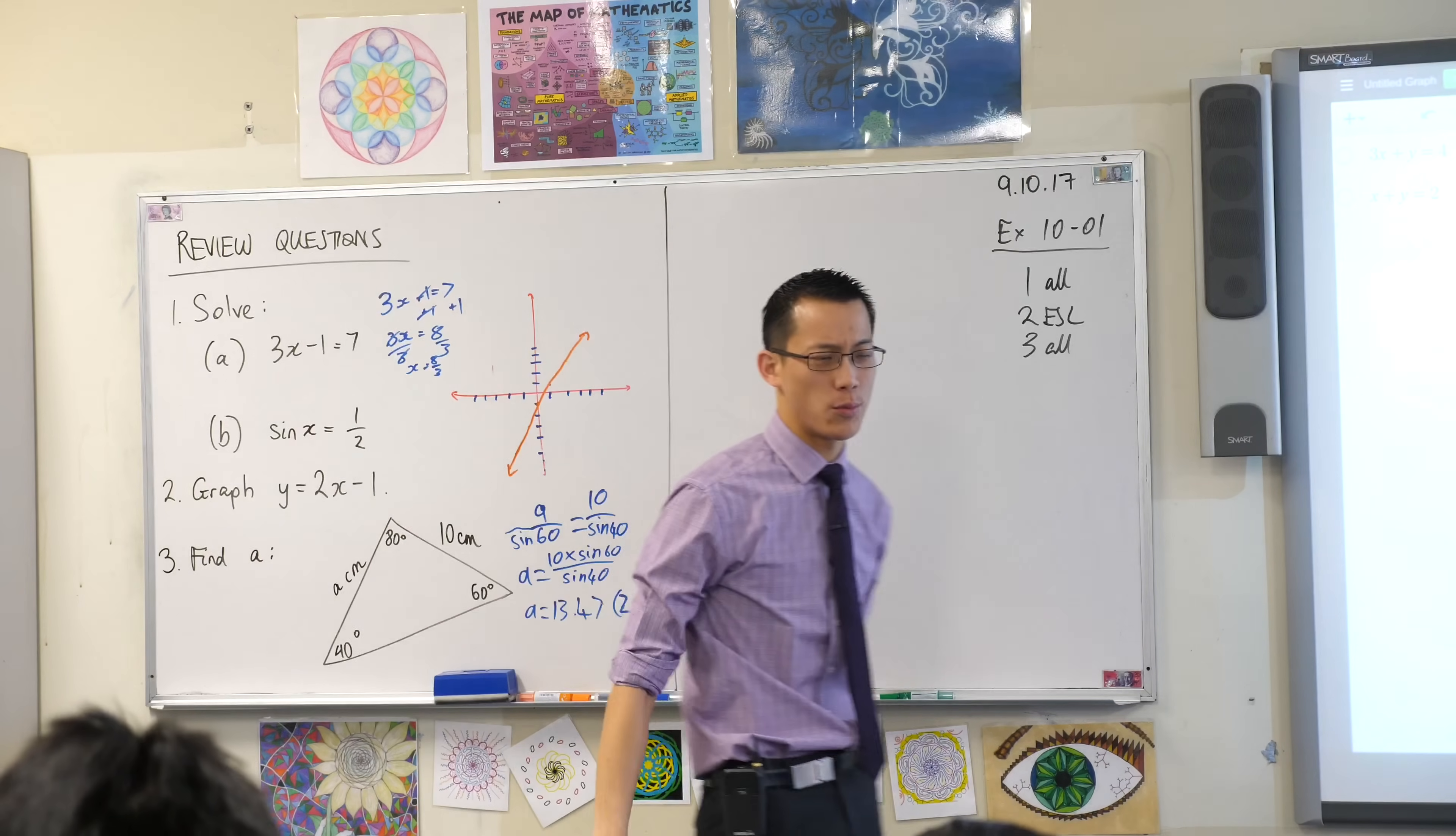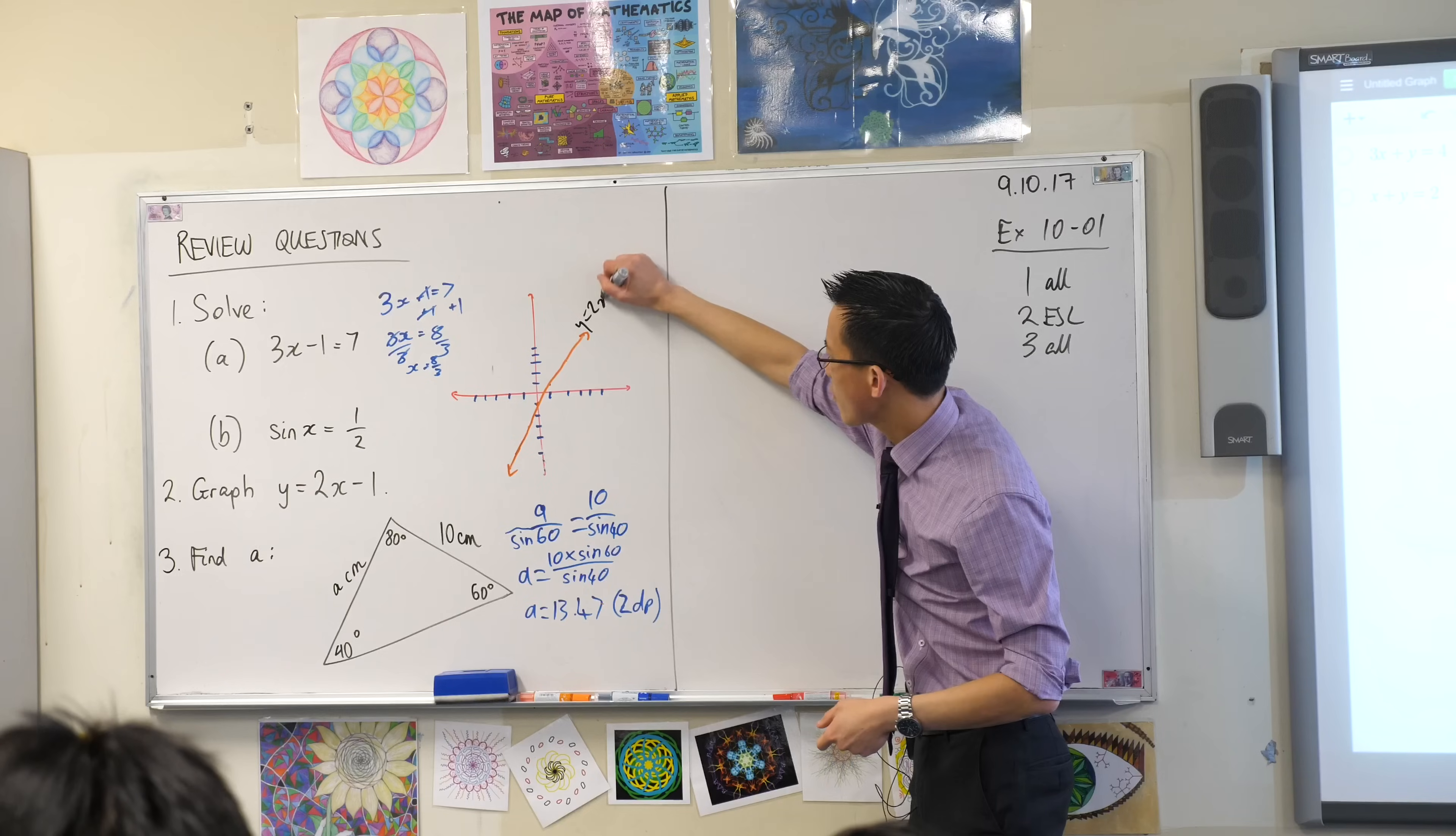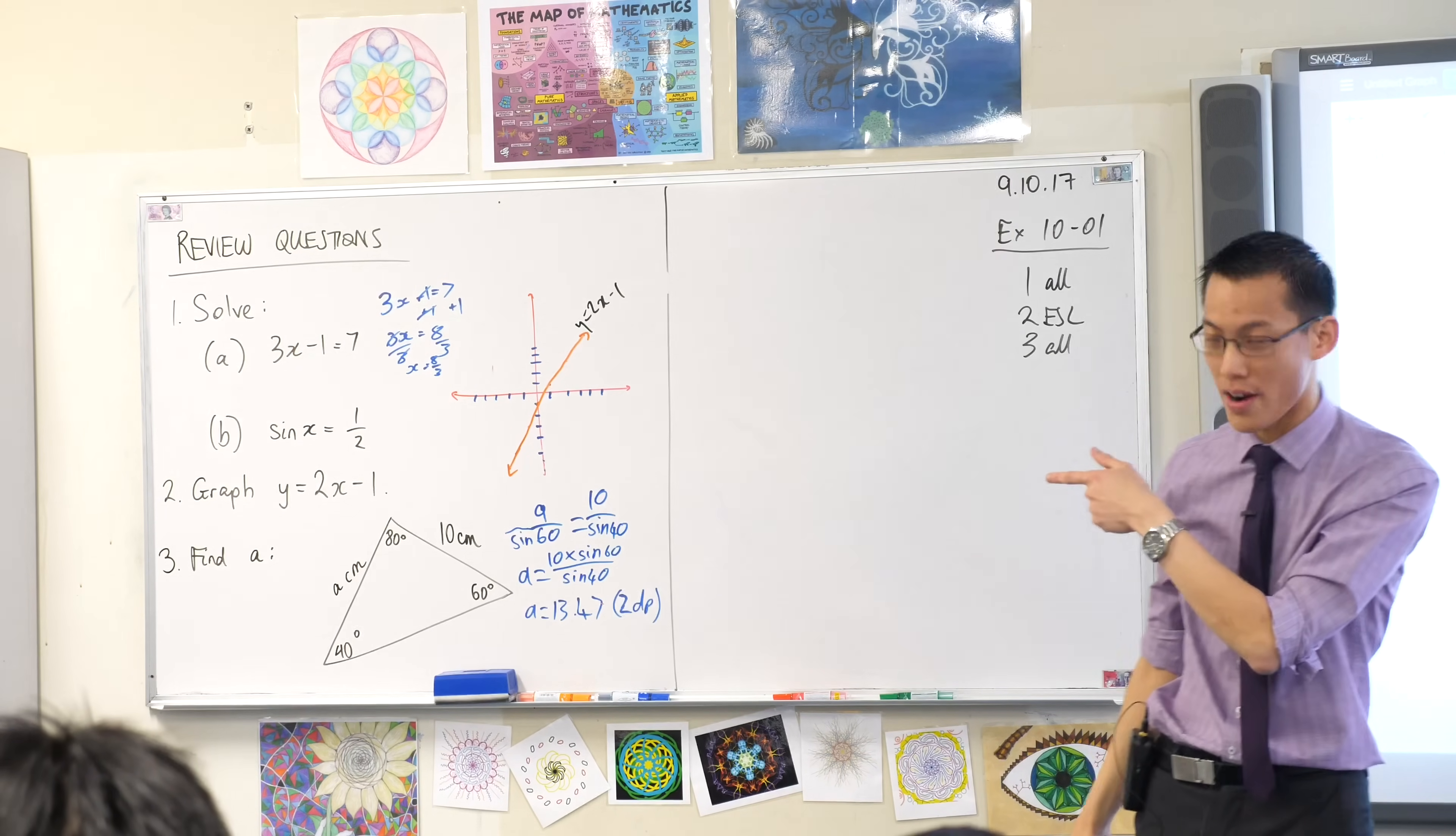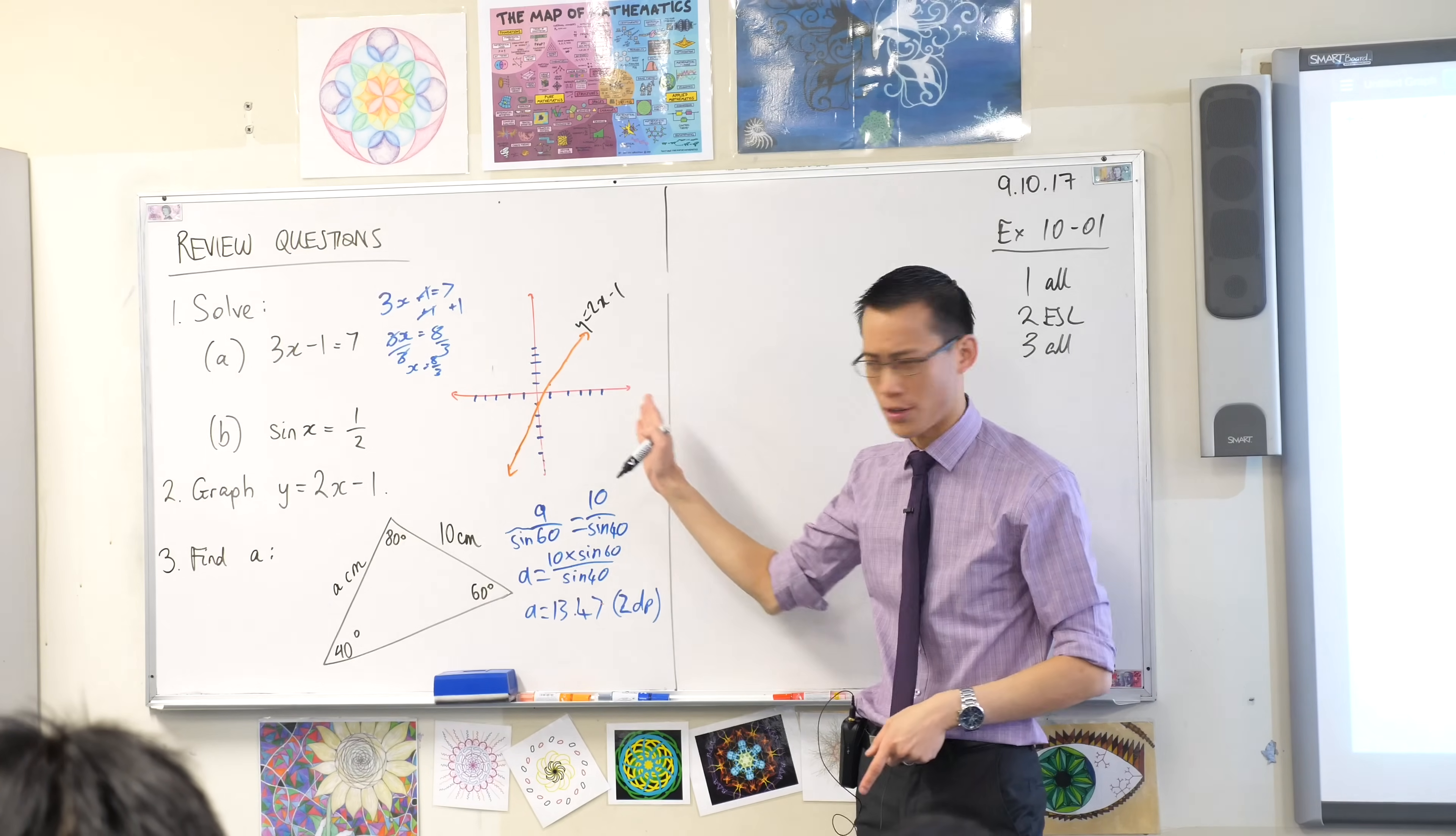Let's have a look at this graph that Waze has given us. y equals 2x minus 1. Now, I hurried him off from the whiteboard before he provided a scale, but you can see he's very consistently made it one mark is one unit, right? One mark is one unit, yep.